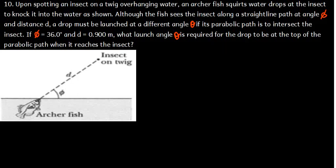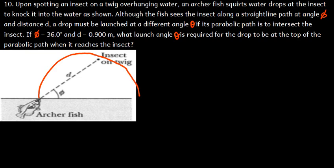As we can see from the diagram, we have the archerfish and the insect on top. The straight line connecting from the fish all the way to the insect is distance d, which is 0.9 meters. From the surface of the water to that line there is an angle phi — this symbol represents phi and not theta. We want to find the angle theta if it was launched as a projectile, going from here up along a parabolic arc. The angle from the launch point all the way to the peak — that is going to be our theta.